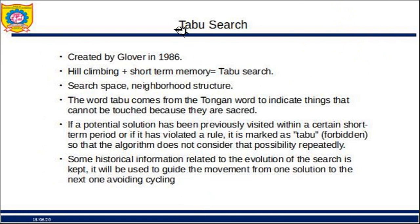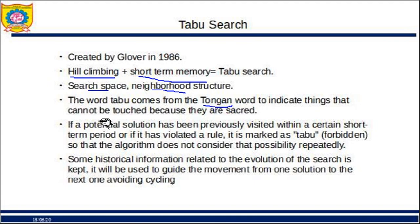The next local search algorithm is Tabu Search, created by Glover in 1986. It is a combination of hill climbing and short-term memory. Again we have a search space with a neighborhood structure. The word 'taboo' comes from a Tongan word indicating things that cannot be touched because they are sacred. Here we will have certain nodes which we cannot touch again — hence they are called sacred or taboo.